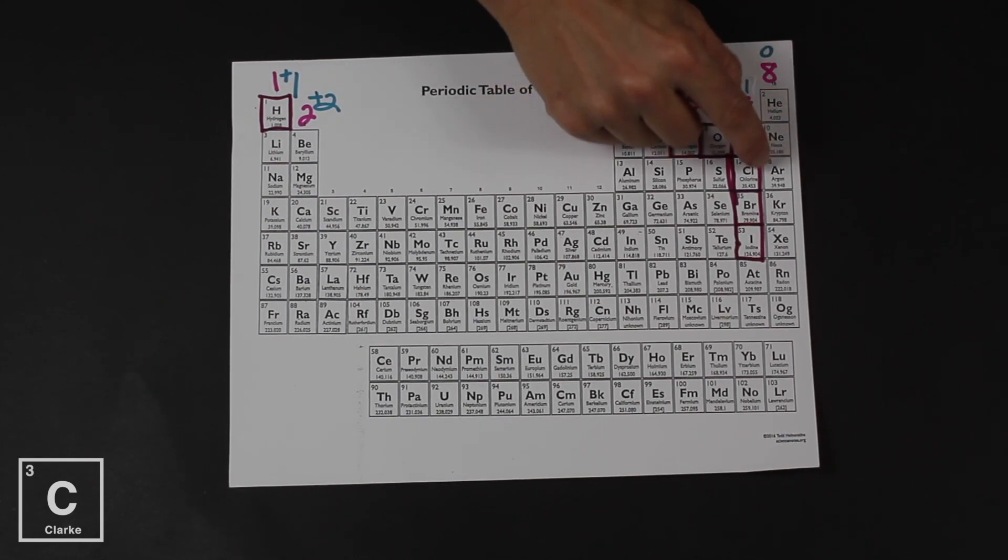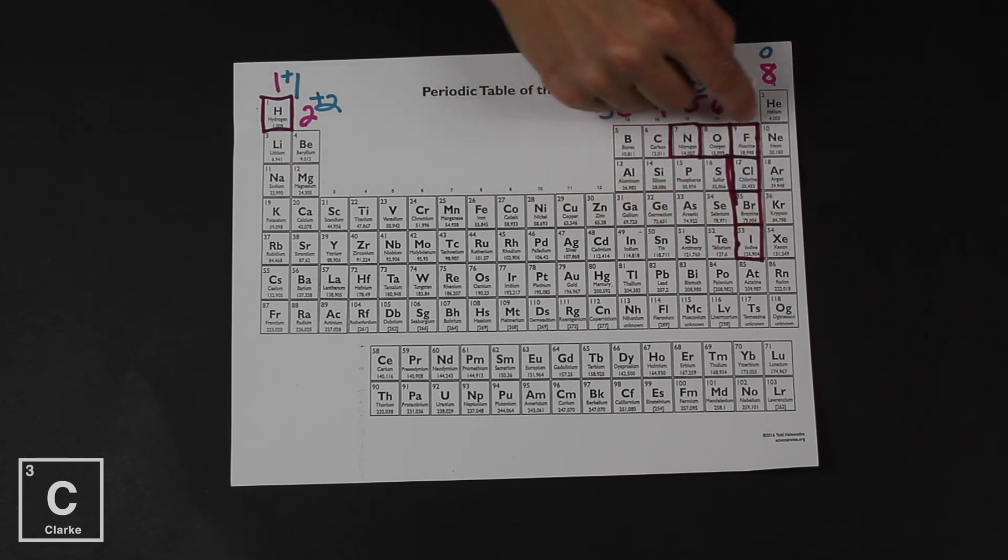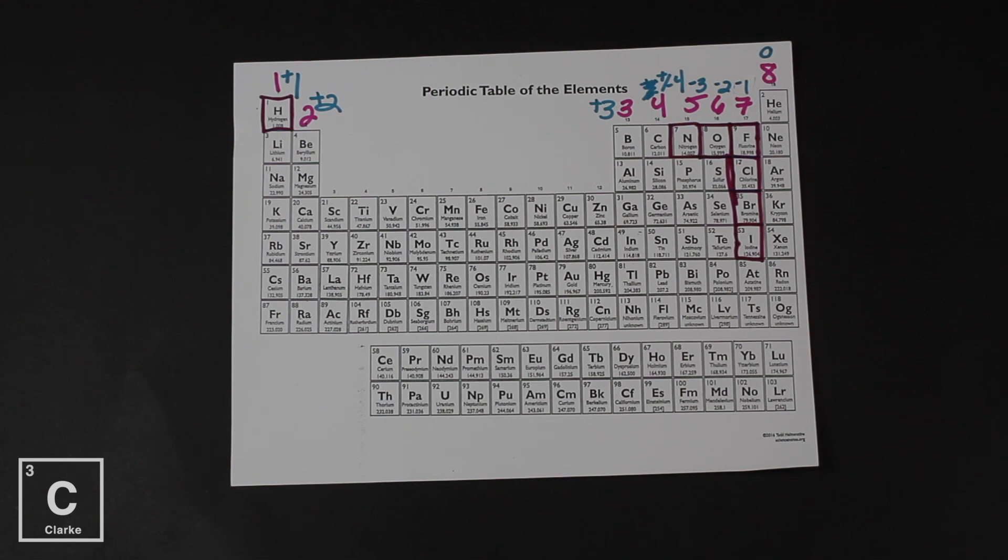Hydrogen is a diatomic gas, and then the rest of them - nitrogen, oxygen, fluorine, chlorine, bromine, iodine - make a seven on the periodic table. Seven total diatomic molecules making a seven. You have to know these because any time I say nitrogen gas, you need to know that's N2. Make sure and mark these on your periodic table.